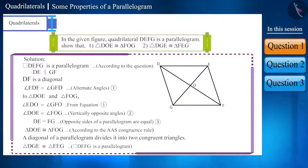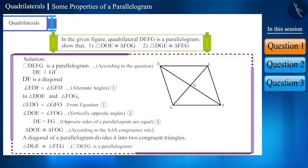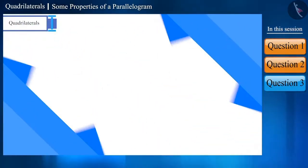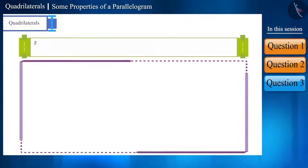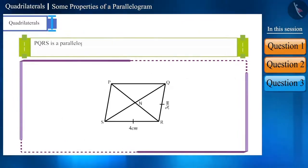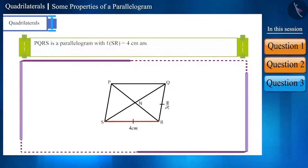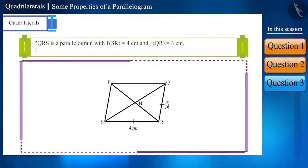Similarly, discuss triangle DGF and triangle FED with your classmates. Let's move to our next question. PQRS is a parallelogram with side SR of length 4 cm and side QR of length 3 cm. Find the lengths of sides PQ and PS.